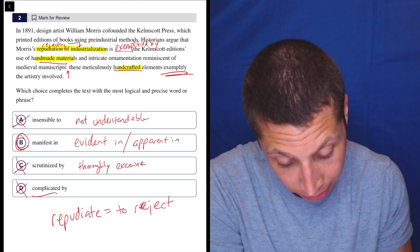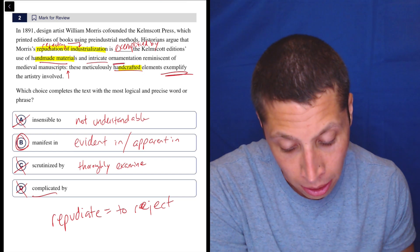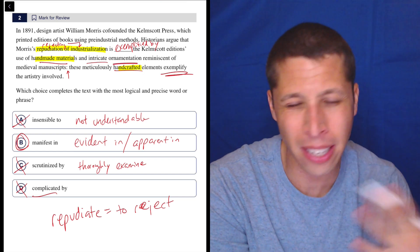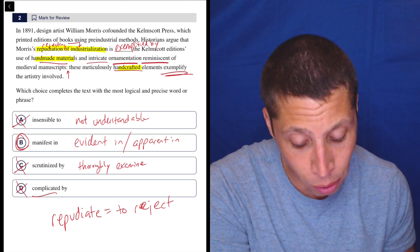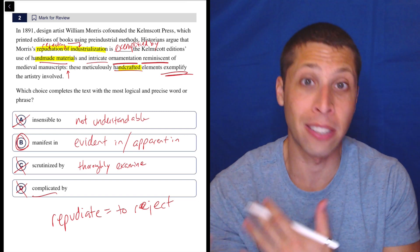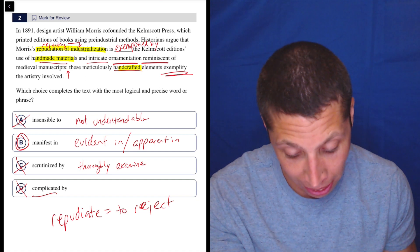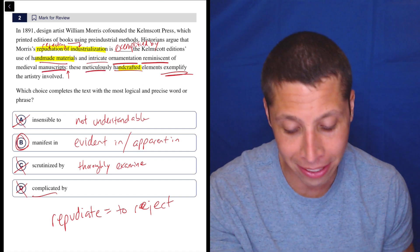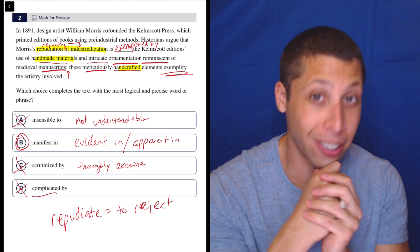We have other words like intricate means complicated. So maybe that's why some people would pick that. Ornamentation means design and complex design. Maybe something showy. Reminiscent means kind of like looking back to something. You reminisce about maybe a summer camp that you loved going to as a kid, something like that. And a manuscript is like a book. Meticulous means something is done with extreme care. So there's a lot of tough words here.